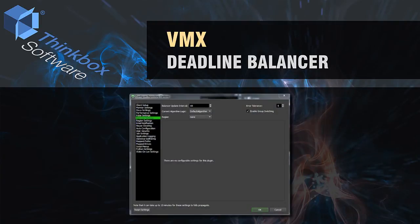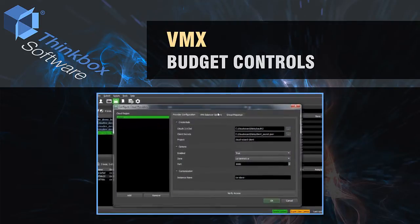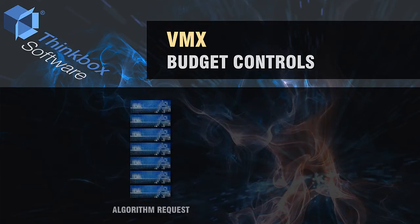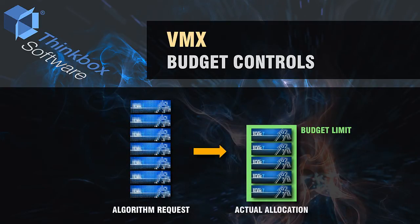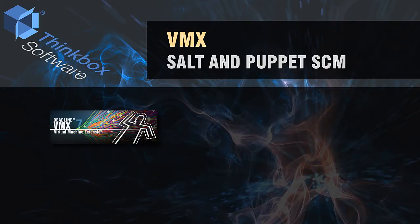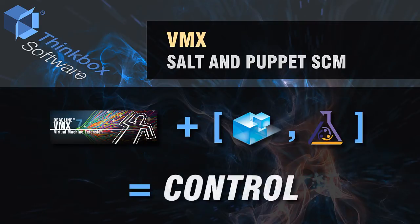The algorithm the balancer uses to control scaling and balancing behavior of VM instances is also pluggable, allowing customers to adapt the behavior to suit their particular use cases. VMX provides budgeting controls that allow administrators to manage cloud costs. A maximum budget can be set for each enabled cloud region and costs can be associated with each VM instance type. Based on these settings, VMX will prevent VM instance scaling from exceeding the allocated total budget for a given region. Deadline's integrated support for Salt and Puppet configuration management tools works equally well on slave VM instances, allowing complete control of the computing environment for jobs processed on the cloud.